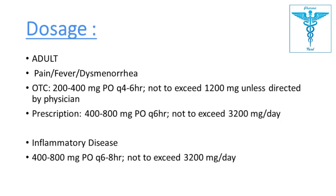Adult dosage for pain, fever, and dysmenorrhea (OTC): 200 to 400 mg orally every four to six hours; total dose should not exceed 1200 mg per day without physician recommendation. With a physician's direction, the dose is 400 to 800 mg orally every six hours, not exceeding 3200 mg per day.